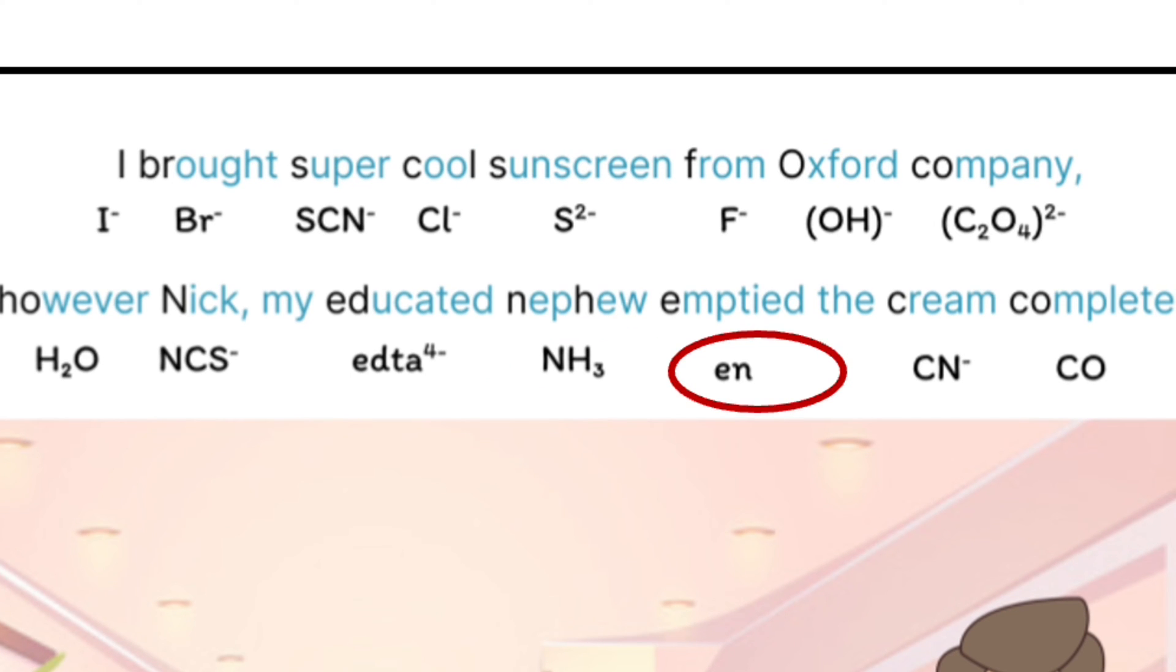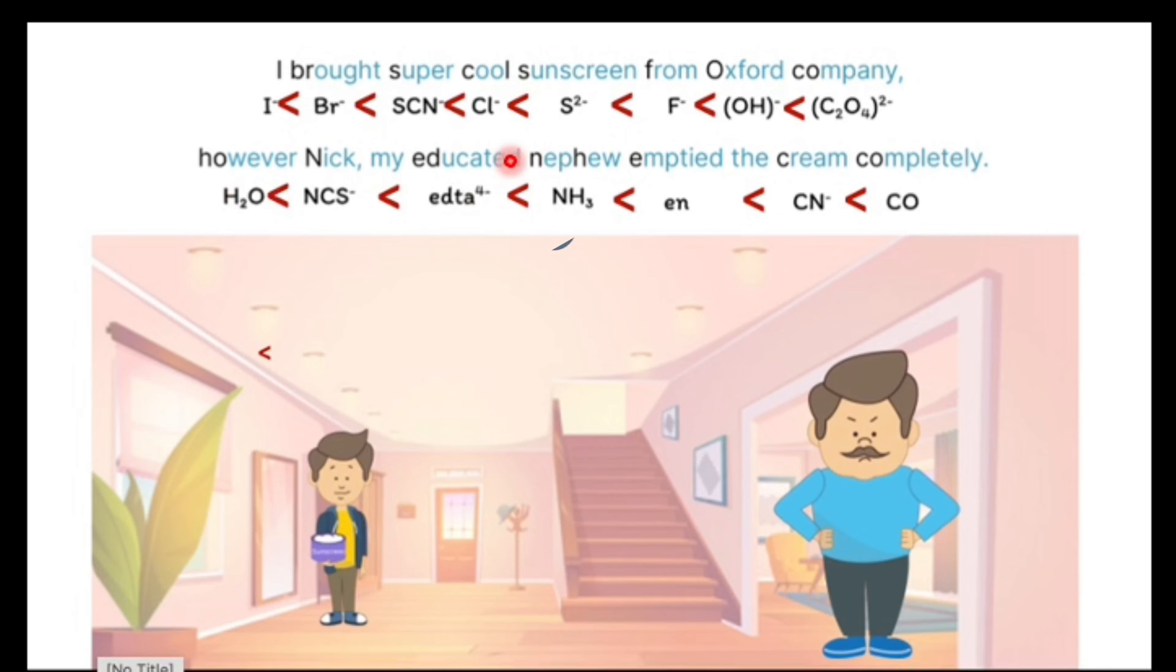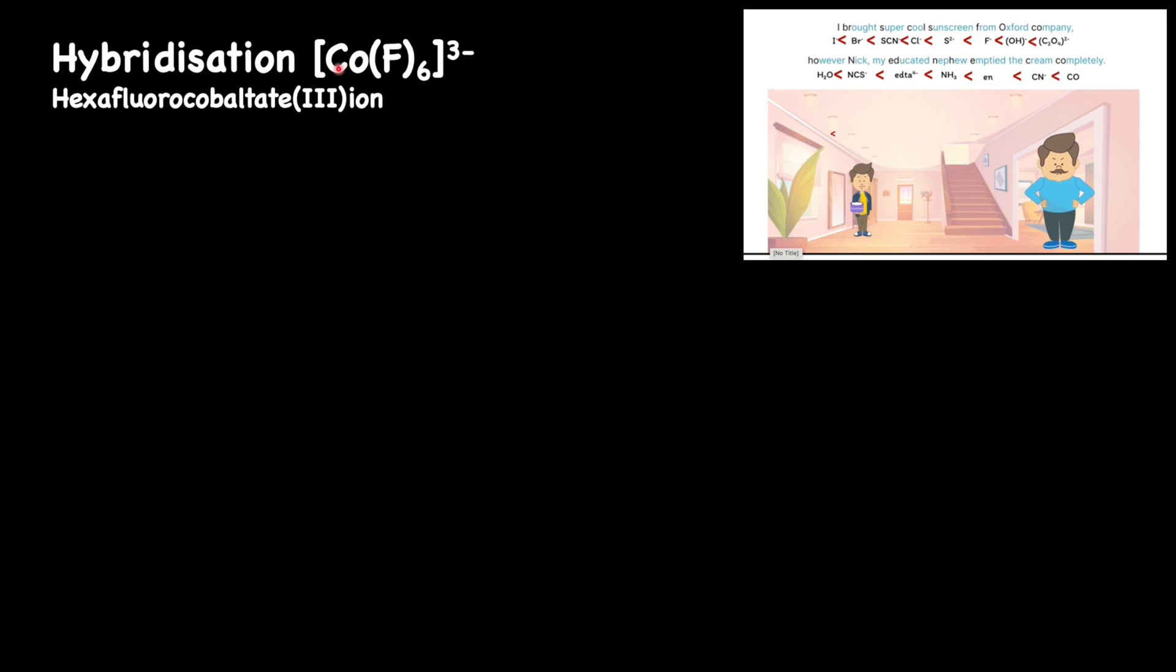cream for cyanide ion, completely for carbonyl ligand. If you look at the series here, fluoride ion is a weak ligand. So because of the presence of the weak ligand, there is no pairing that takes place in this complex.